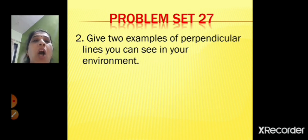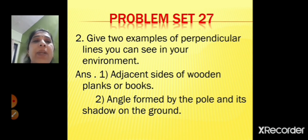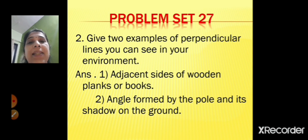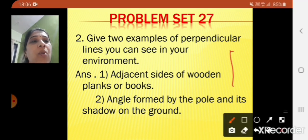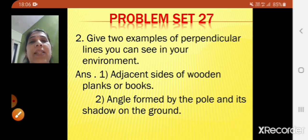Give two examples of perpendicular lines you can see in your environment. The first example is the angle formed by the pole and its shadow on the ground — that is perpendicular. The second example is adjacent sides of wooden planks or books. The adjacent sides of a book or a wooden table also form perpendicular lines.